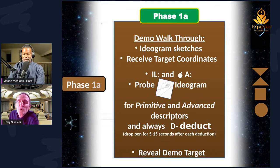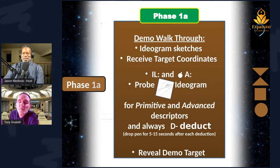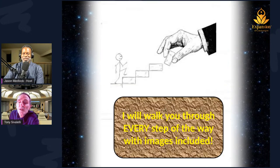In the demo walkthrough we're going to practice some ideogram sketches. We'll review what target coordinates are — they're just two sets of four digits. IL is an ideogram label; A is a description of the movement of the ideogram you just created. You'll probe the ideogram — take the tip of the pen and touch what you sketched for a second or two each time — and write down what you sensed. Those are the primitive and advanced descriptors. And you'll learn how to deduct on the right-hand side.